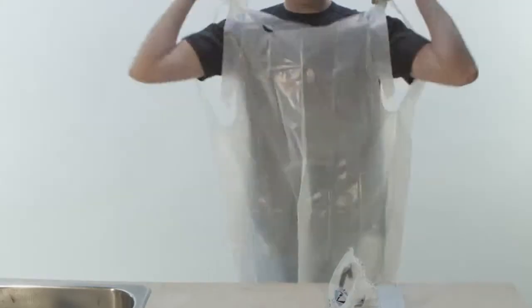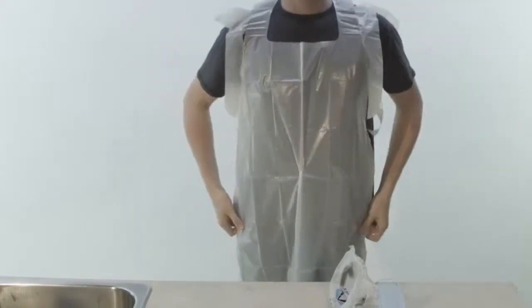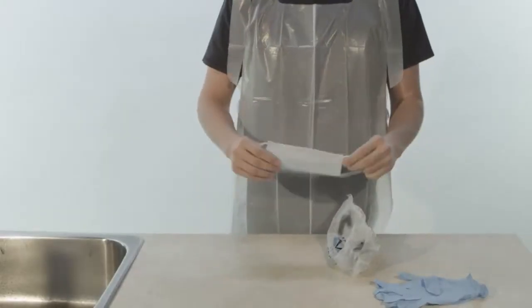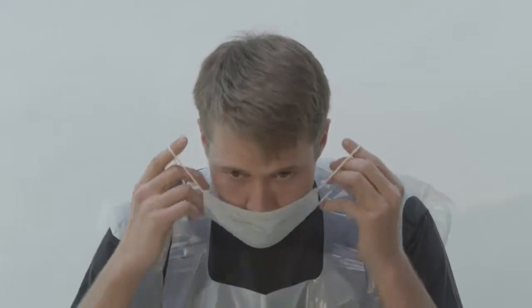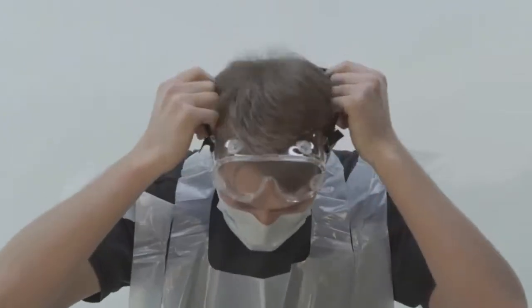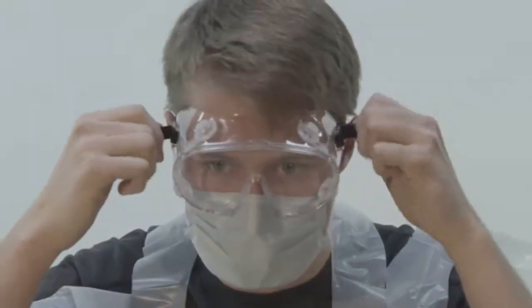Put your head and arms through their corresponding holes when equipping an apron. When putting a face mask on, put the loops behind your ears, pull the bottom portion under your chin, and form the nose piece properly on your nose. Goggles should be pulled over your hair, securely placed over your eyes, and then tightened.